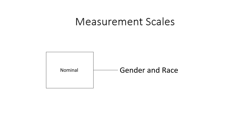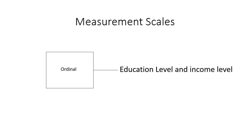For example, consider data showing the preferred colors of five people: blue, green, pink, and brown. The next scale is ordinal — with ordinal scales, the order of the value is what's important, however the differences between each value are not really known. For example, is the difference between 'okay' and 'not happy' the same as the difference between 'happy' and 'very happy'? We can't say.